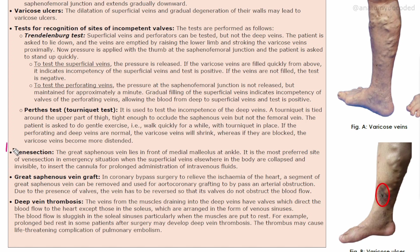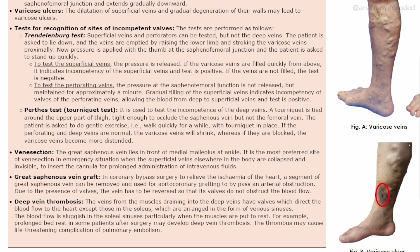The great saphenous vein is a preferred vein for venisection — a cannula can be inserted into the vein for giving intravenous fluids — especially in emergency situations when superficial veins in other parts of the body are collapsed and invisible. The great saphenous vein can also be taken as a graft in coronary bypass surgery to relieve ischemia of the heart.